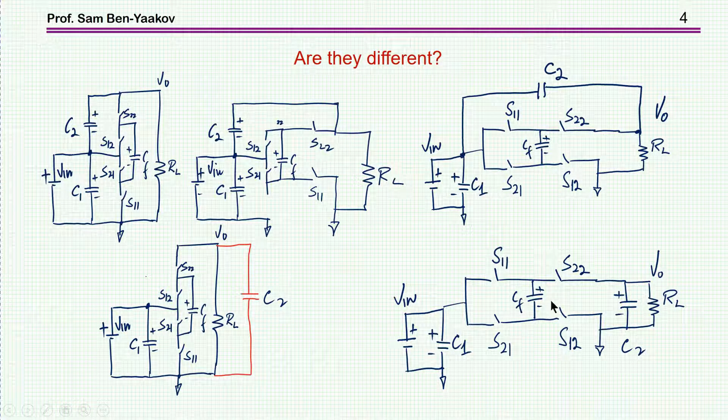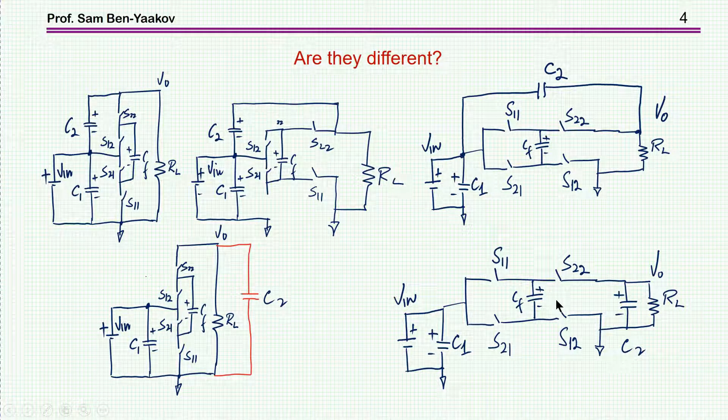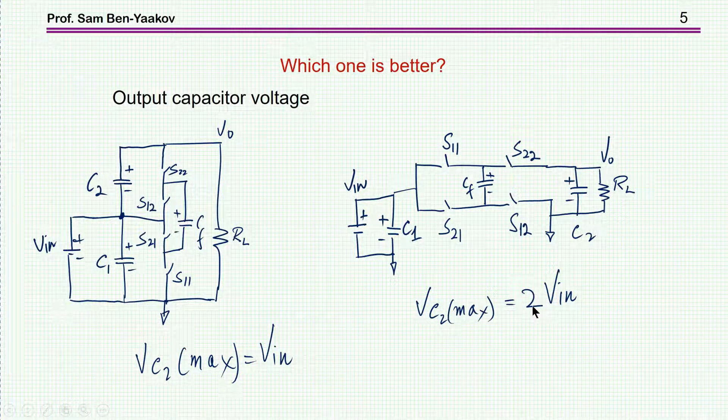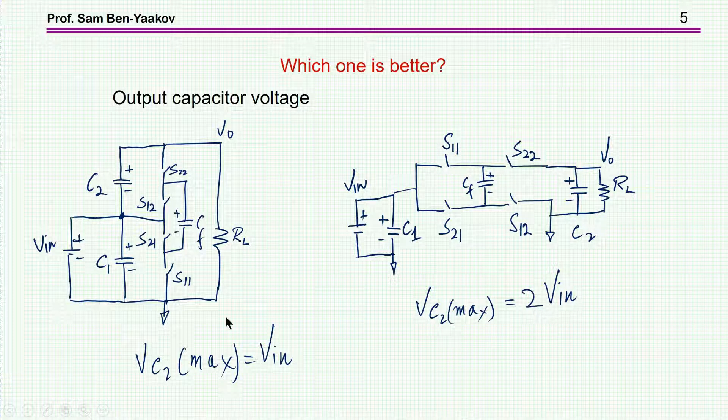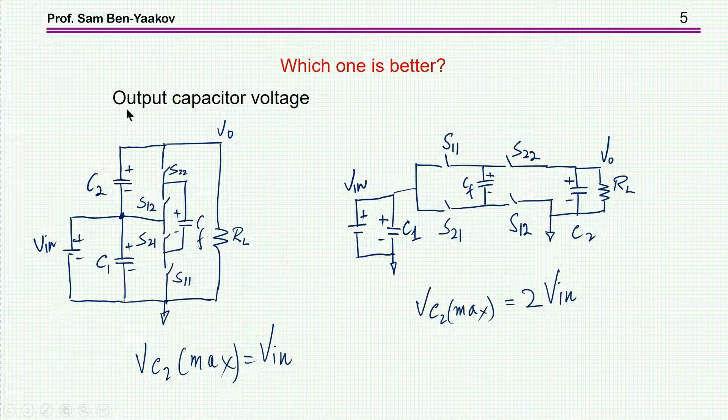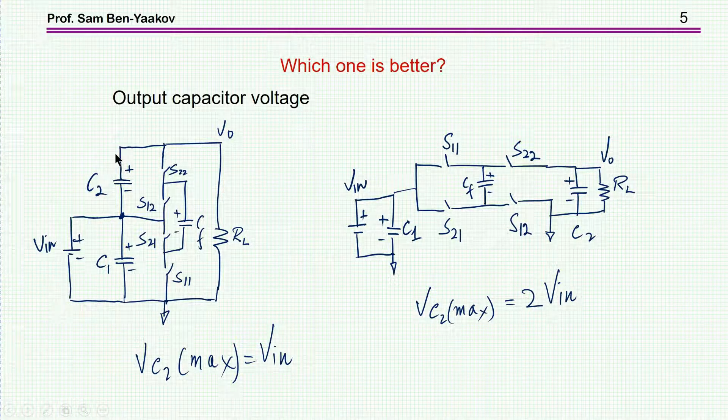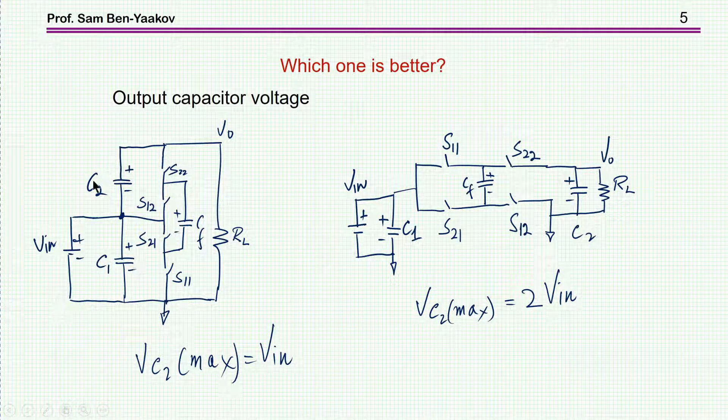These are very similar, and the question is whether there is any difference in the performance, aside from the fact that, of course, the output capacitor, in this case, is exposed to a voltage which is at no load two times Vin, while in this case, in the ladder case, it's only Vin, because in this case the output voltage is actually divided between these two capacitors, and each one of them is carrying a voltage of Vin. So there is a difference between these two.